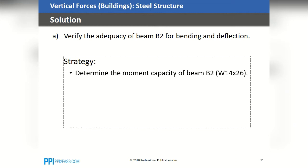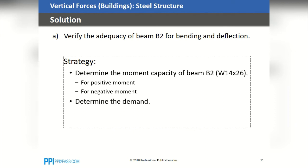As you will see in the next slide, beam B2 actually consists of a cantilever. So in that case, we should figure out the capacity for both positive moment and negative moment. Then we'll go ahead and determine the demand, which also consists of both positive and negative. Finally, we will calculate the maximum deflection due to the applied loads.